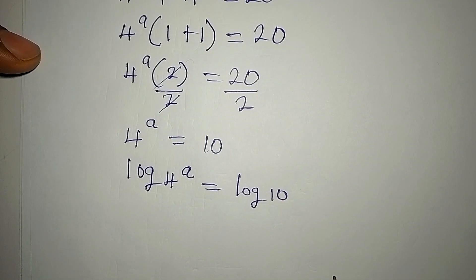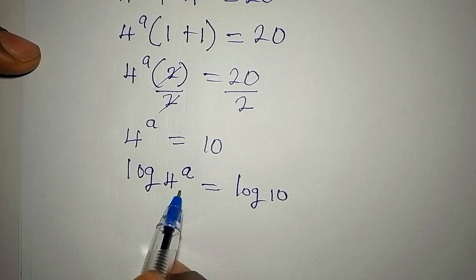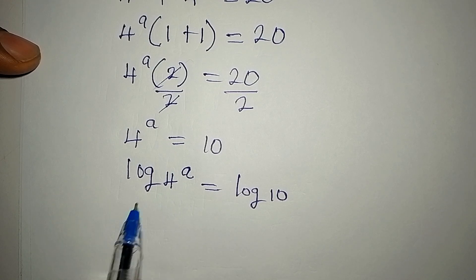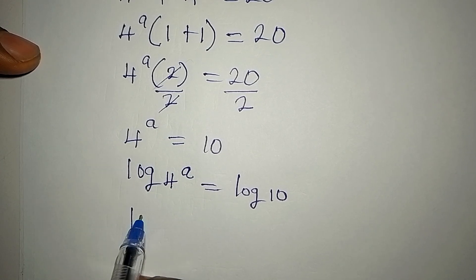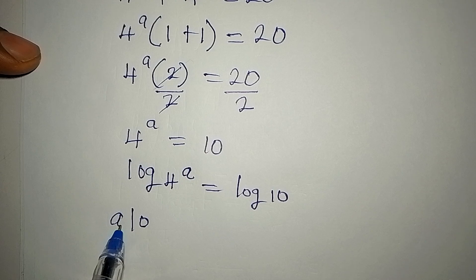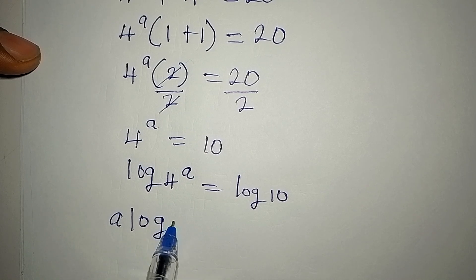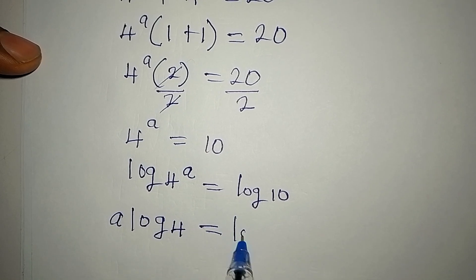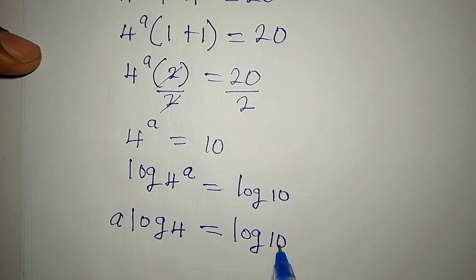4 to the power of a. The power here can always come behind as it multiplies log 4. So we have a multiplied by log 4, and that is equal to log 10.